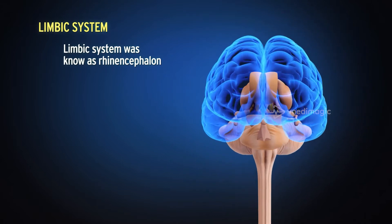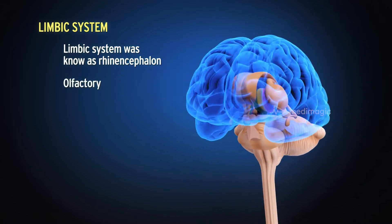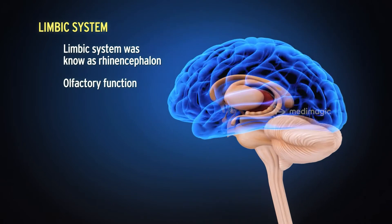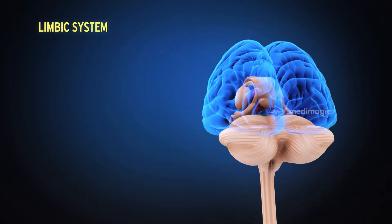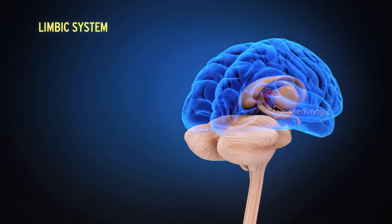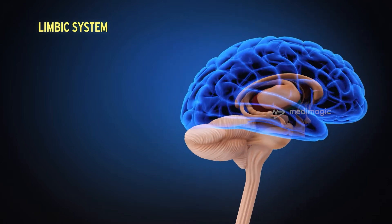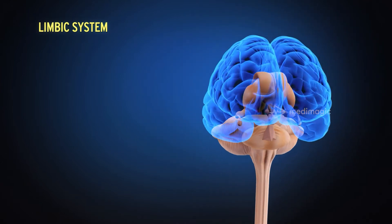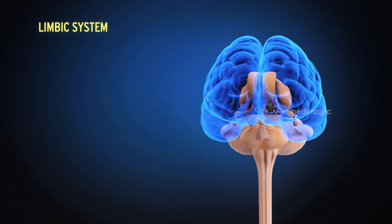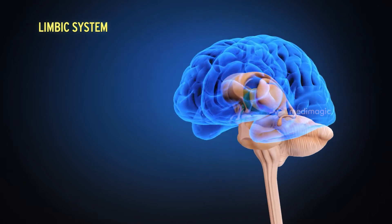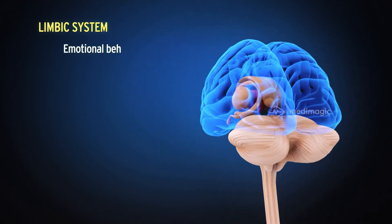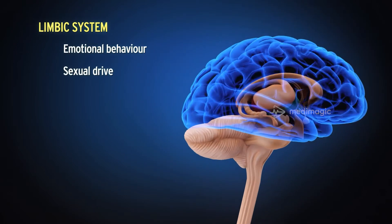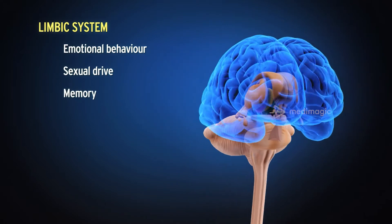The limbic system was known as rhinencephalon as it is concerned with olfactory function. However, in human beings, only a small part of the limbic system is concerned with smell. It is also involved in emotional behavior, sexual drive, and memory.